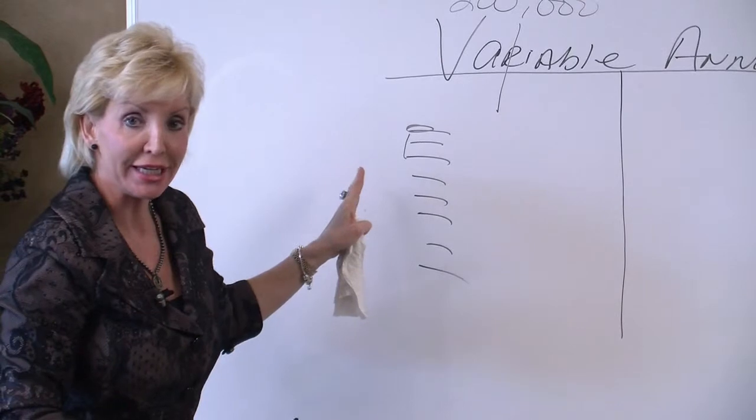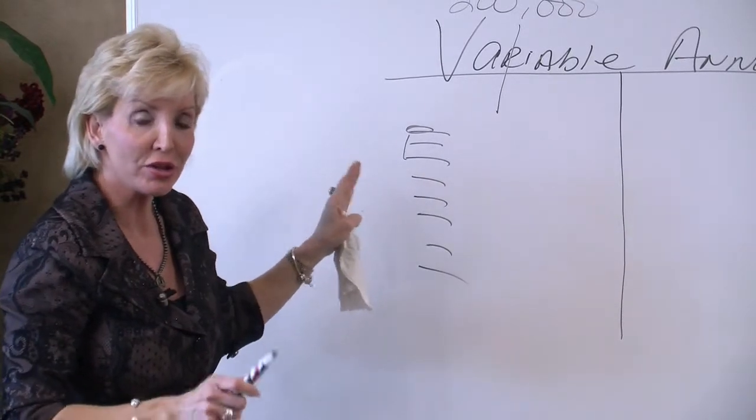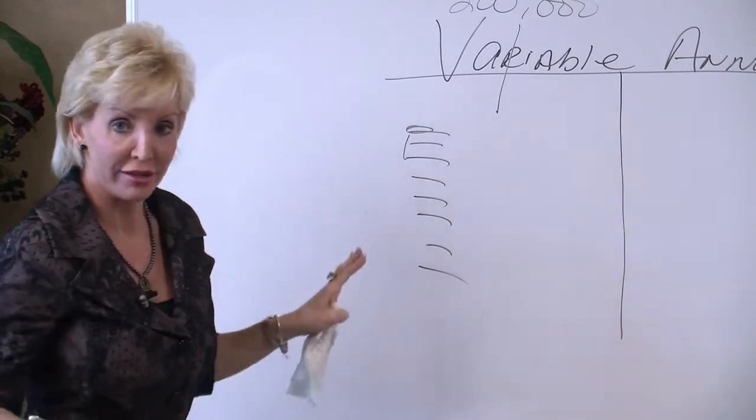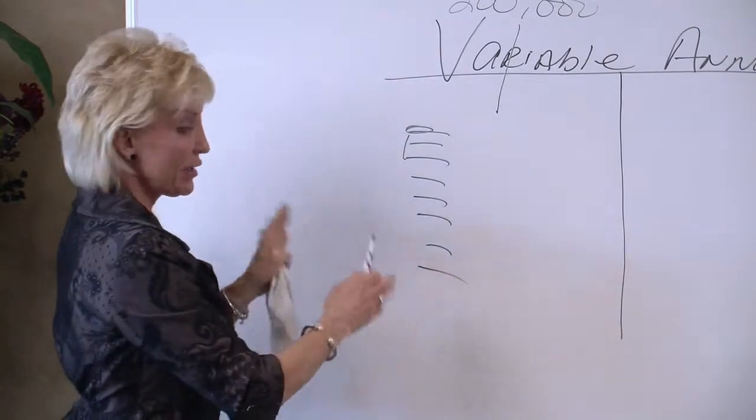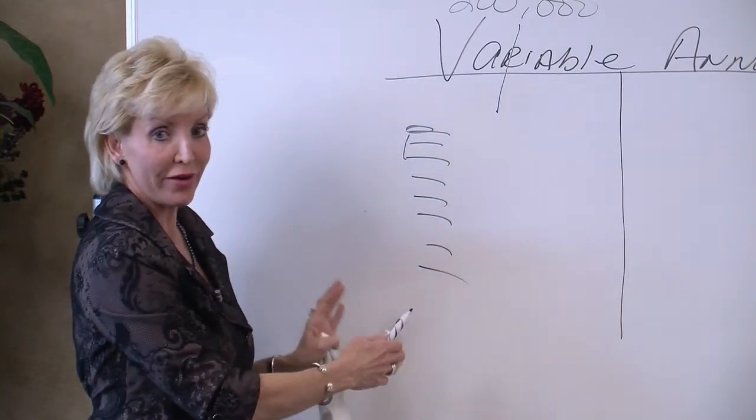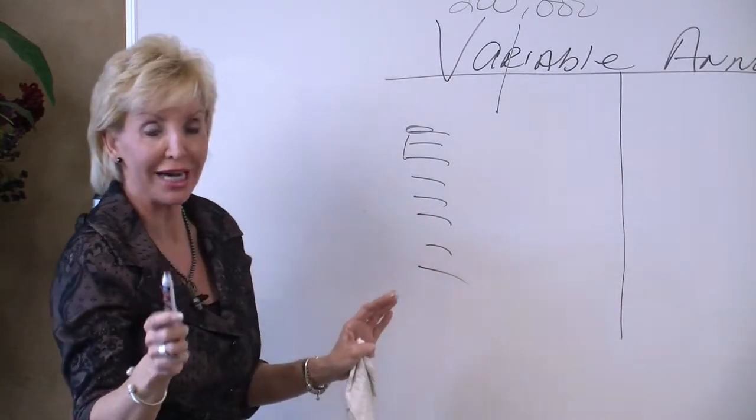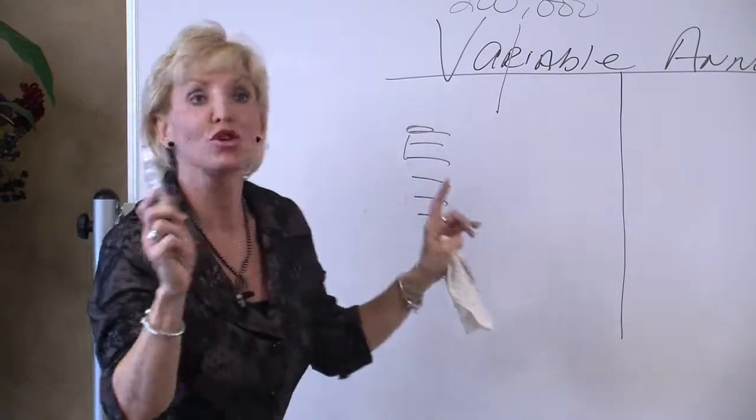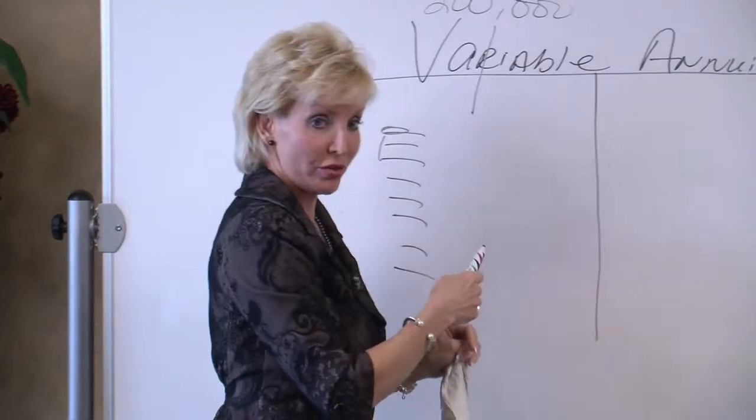There's no guarantee on a variable annuity, period. When you die, you get the death benefit of whatever your account value is. The only way there's any kind of guarantee on a variable annuity is if you add a rider to it.